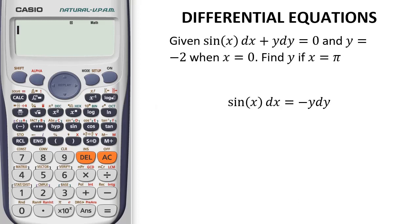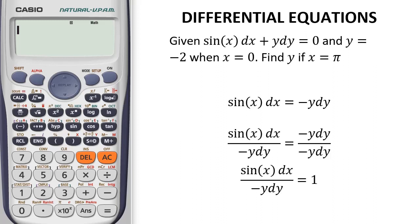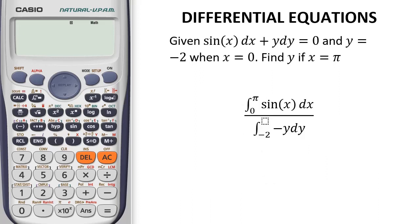First, we have to separate the variables x and y. Then, we divide the whole equation by negative y dy, making the equation equal to 1. Then, we have to integrate the numerator and denominator with the given limits and one of the choices.